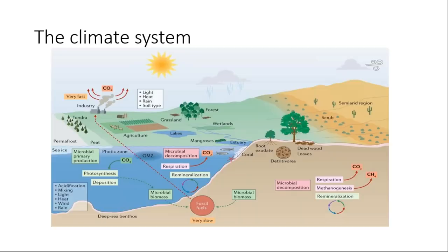Moving forward, let's look at the climate system. From the picture displayed, you could see that everything there explains the climate system. Looking closely, there are basically four components that make up the climate system. We have the atmosphere - we're going to discuss each component one after the other. Then we have the biosphere, which is the part of earth where life exists. We have the lithosphere, which is the solid earth, where you have the tectonic plates, volcanoes, and mountains.